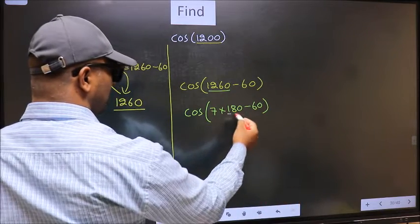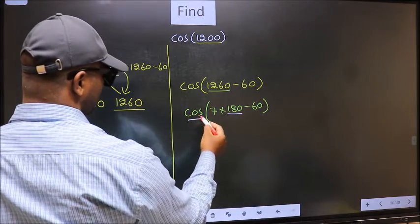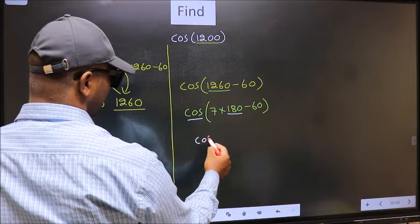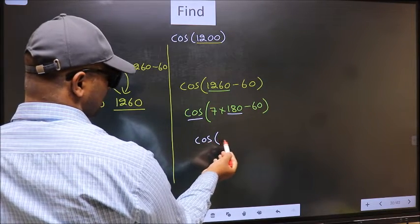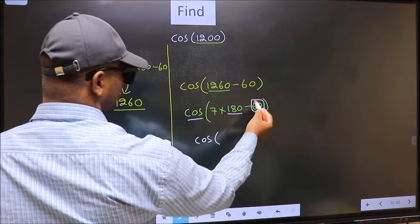Next, here we have 180, so cos is not going to change. It will remain cos, and inside we get this angle 60.